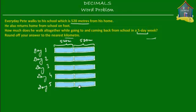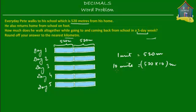Altogether in a five-day week he walks all these blue blocks. How many blue blocks are there? One, two, three, four, five, six, seven, eight, nine, and ten. So if one blue block, or one unit, is equal to 520 meters, then 10 units — because there are 10 blue blocks — are equal to 520 times 10 meters. So he walks 5200 meters in the whole five-day week.